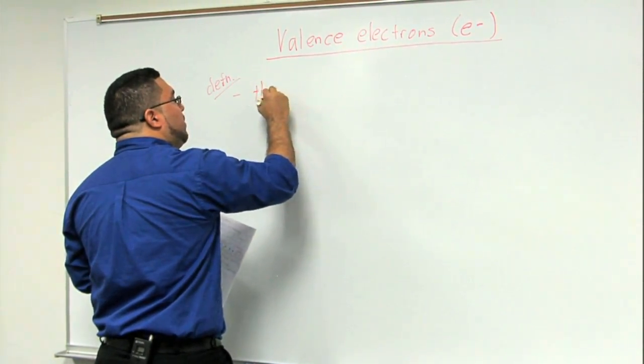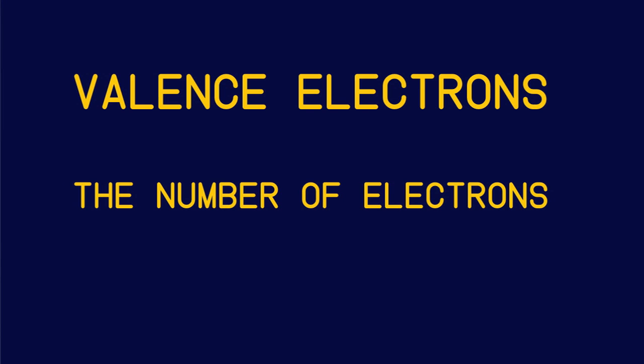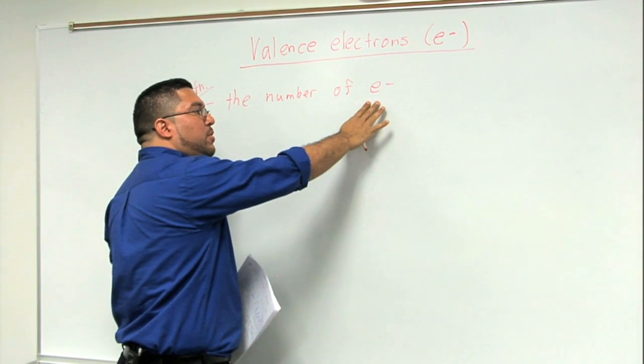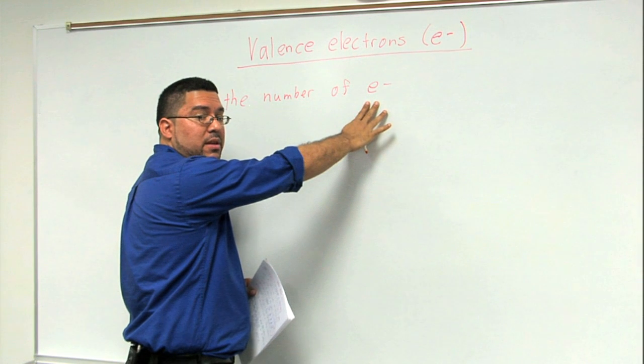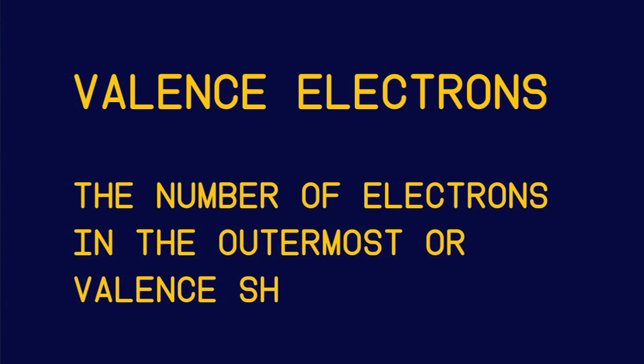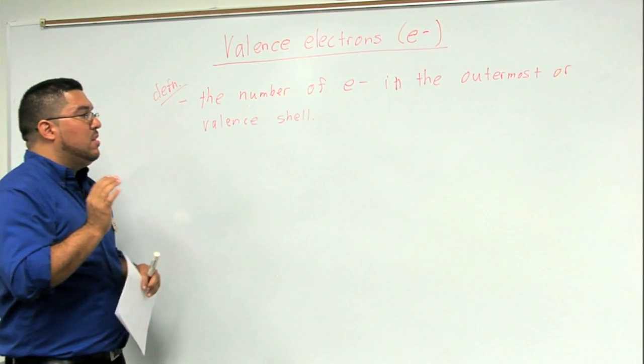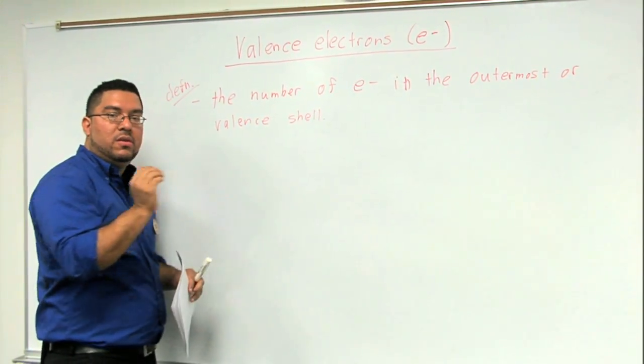The definition of valence electrons is the number of electrons, and for notation purposes, I'm going to be putting E- and that will mean electron. So it's the number of electrons in the outermost or valence shell. The valence electrons are the number of electrons in the outermost or valence shell of an element.